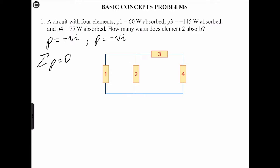Kirchhoff's first rule, or KCL, states that the algebraic sum of all current entering or leaving a node must be equal to zero. This idea is commonly referred to as the conservation of charge — the algebraic sum of current must be equal to zero. So we can then go ahead and solve these problems.